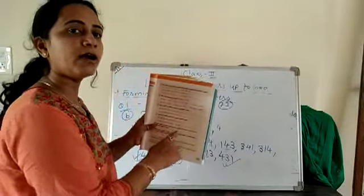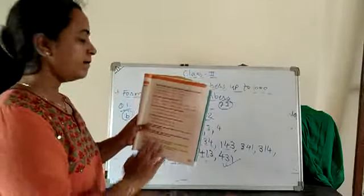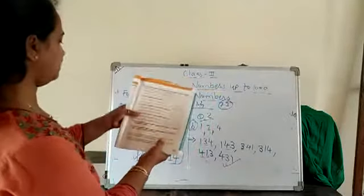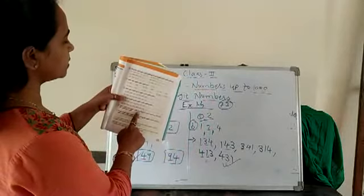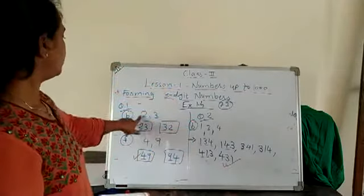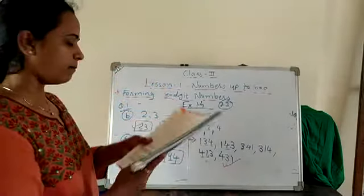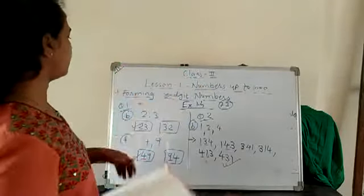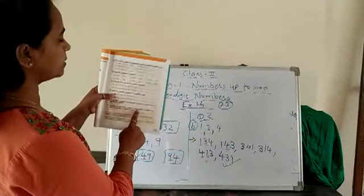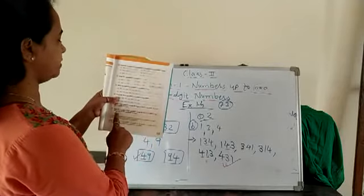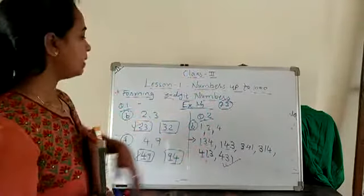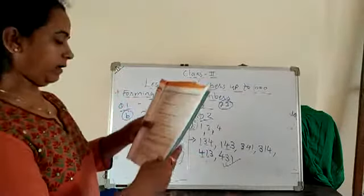Then descending order — in descending order, biggest to smallest number. Same method: see the 100s place, 10s place, and 1s place. Then, form 2-digit numbers using the digits 9 and 6 — use 2 numbers to form. Tick the smallest number — same method. Then form all possible 3-digit numbers using the digits 1, 5, 6, only once. Same method: prepare 6 numbers and tick the greatest number.